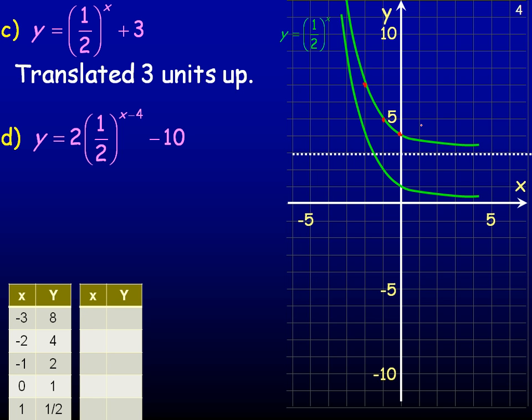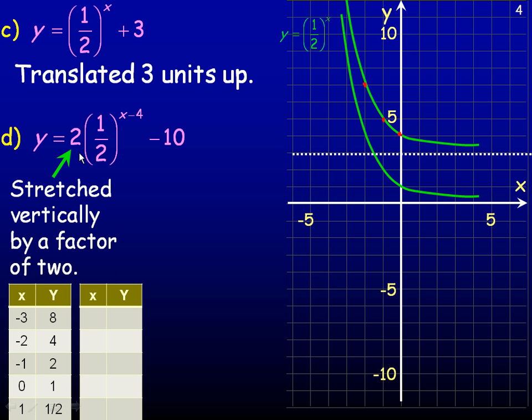Now, the last example has more than one transformation, so that's why I will use a table. And so the 2 multiplied by the whole function means it's stretched vertically by a factor of 2, so all the y values are doubled.